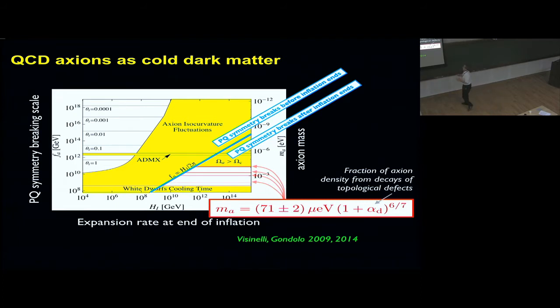The other side of this diagram, when the PQ symmetry breaks after inflation, is what is most commonly discussed. In this case, the mass of the dark matter axion would be around 70 microelectron volts. There are no better calculations, but this is a ballpark, several tens of microelectron volts.